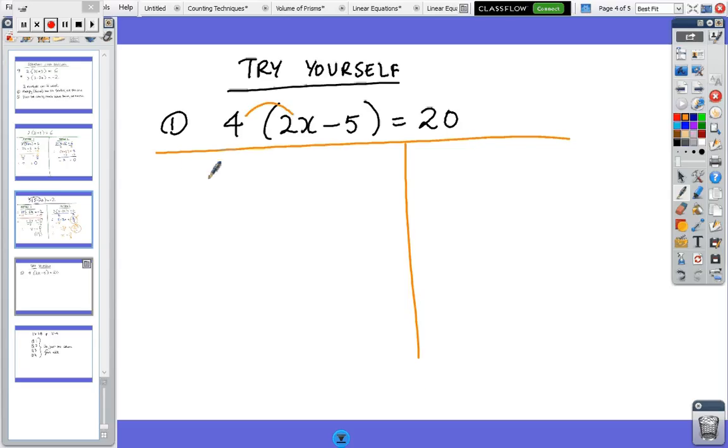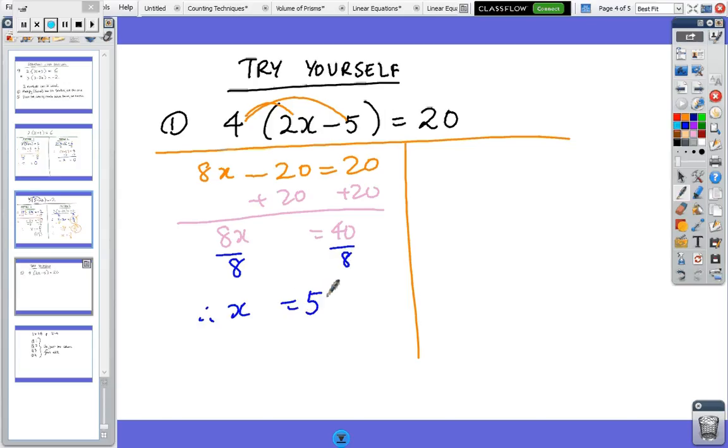Method 1, multiply out. So 8x minus 20 equals 20. Then plus 20 to both sides, and so 8x equals 40. Then divide by 8, and so x equals 5.